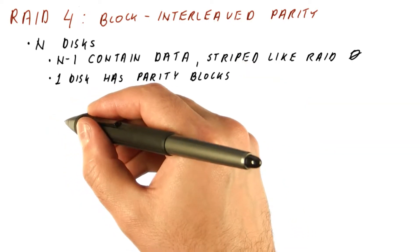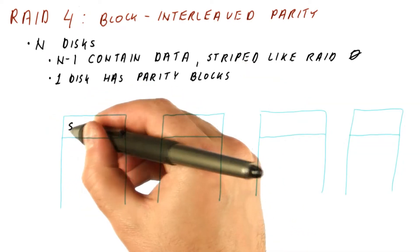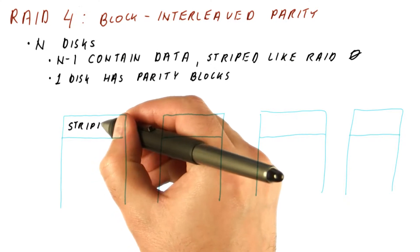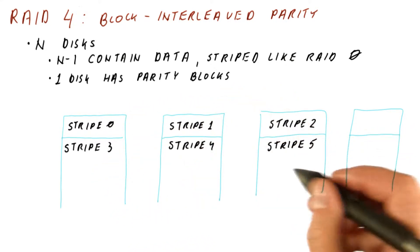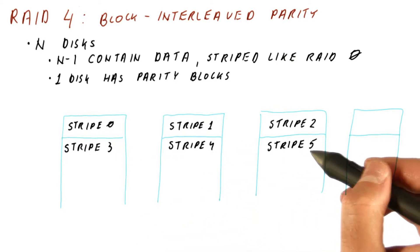So let's look at an example with four disks. We said that three of the disks contain data. So this would be stripe 0. Then here we have stripe 3, 4, and 5, and so on.